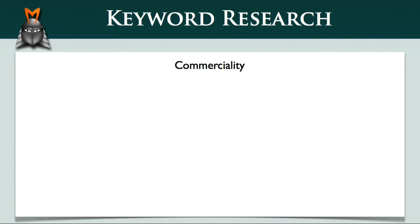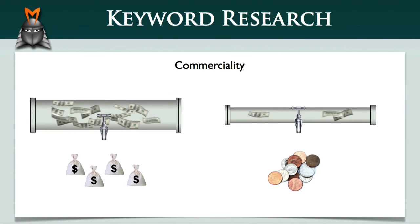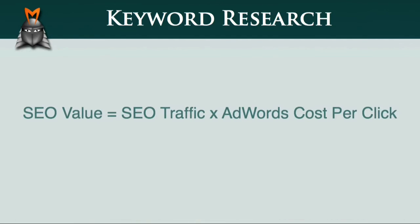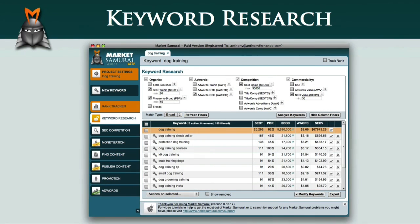So just to recap: in this video we saw that commerciality provides an indication of the monetary flow associated with different keyword phrases. We saw that a useful way to calculate the commerciality of a phrase is to multiply its SEO traffic value by its AdWords cost per click value. And finally, we saw how to find high commerciality keywords using Market Samurai.